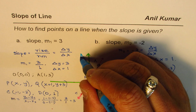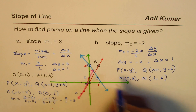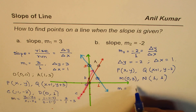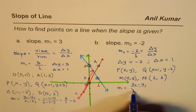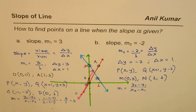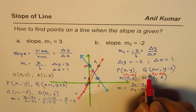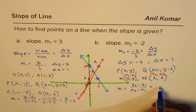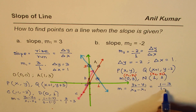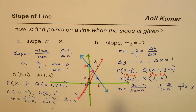The line is definitely going downwards, confirming a negative slope. Let's verify the slope using the formula: y2 minus y1 divided by x2 minus x1. Taking M as (x1, y1) and N as (x2, y2): slope equals 1 minus 3 divided by 1 minus 0, which is minus 2 over 1 equals minus 2. The slope matches.